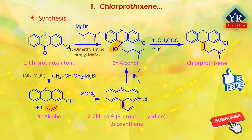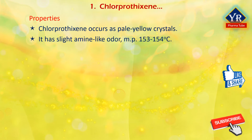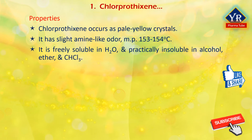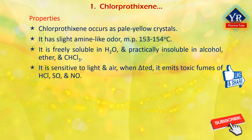Dehydration of the second tertiary alcohol is accomplished by chlorination of the tertiary alcohol group by thionyl chloride, forming the diene 2-chloro-9-(3-propene-1-ylidene)-thioxanthene. Addition of dimethylamine to this diene at high temperature yields the desired compound chlorprothixene. Chlorprothixene occurs as pale yellow crystals with a slight amine-like odor and has a melting point between 153 and 154 degrees centigrade. When heated to decomposition, it emits toxic fumes of hydrogen chloride, sulfur oxide, and nitrogen oxide.